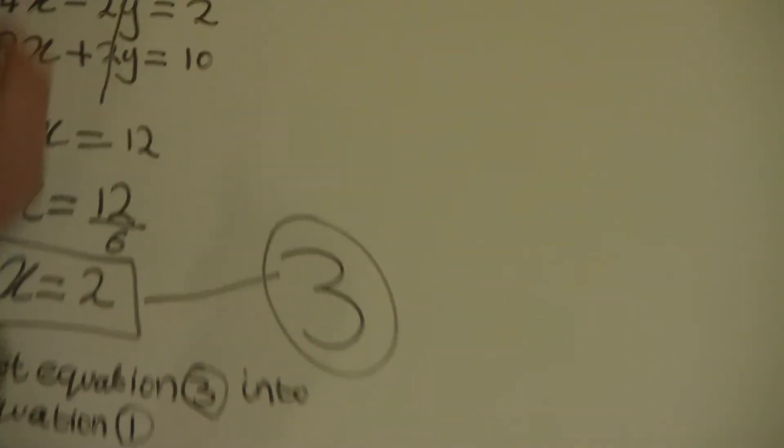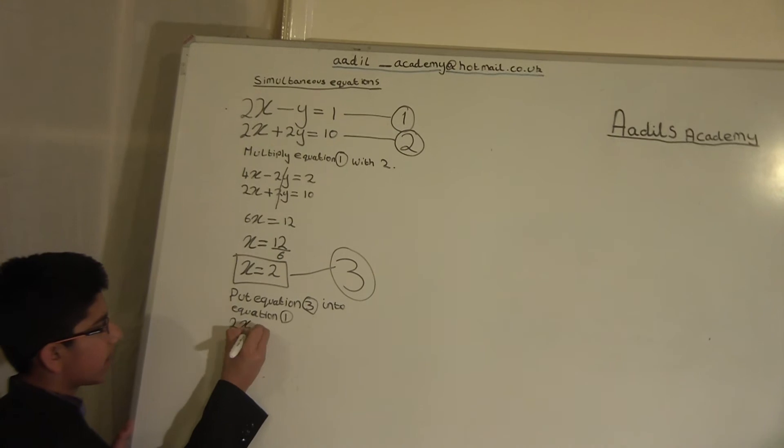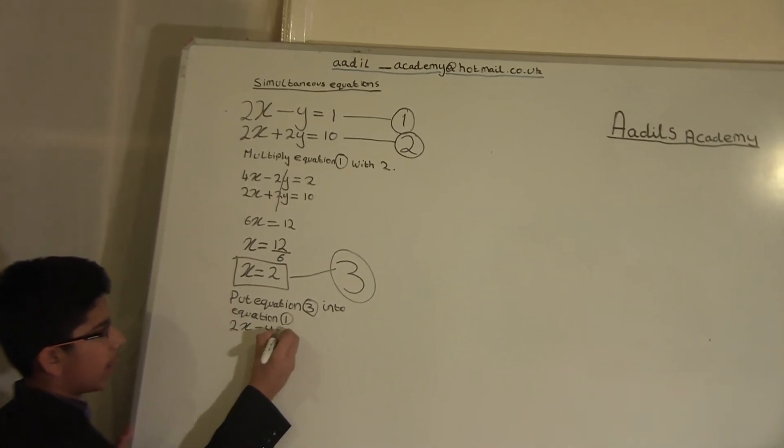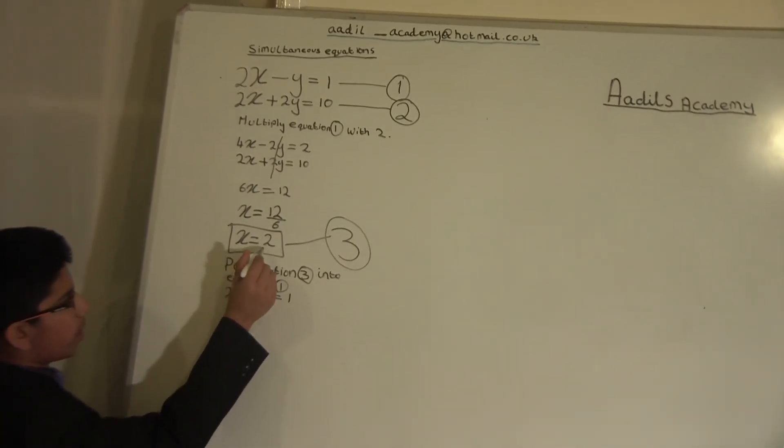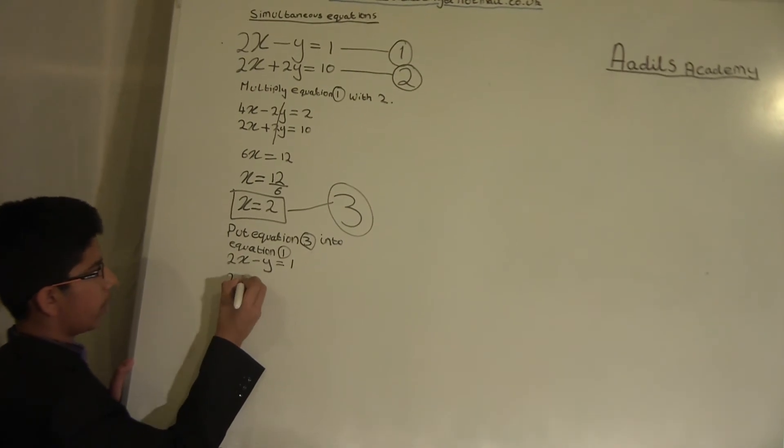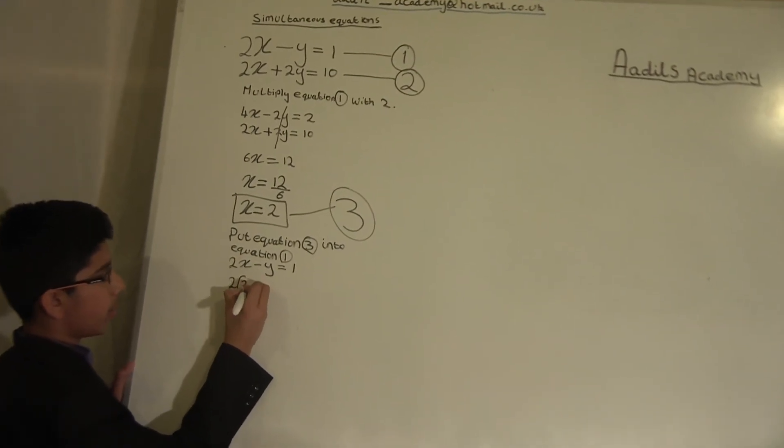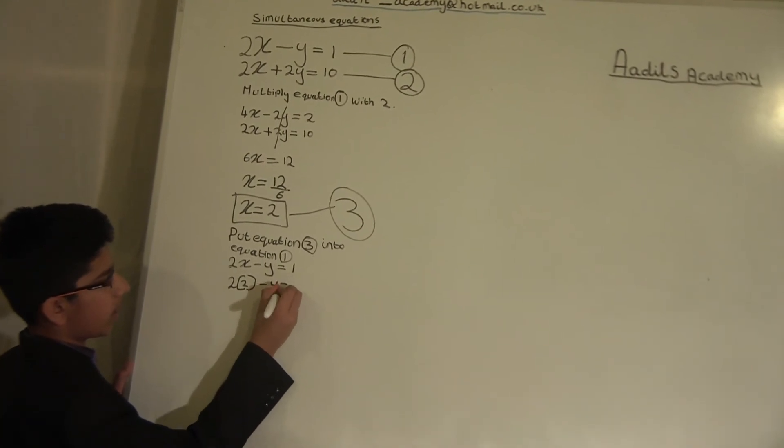So we will write that down to make it easier for you. 2x minus y equals 1. Now we will write that 2 instead of the x. So that will be 2 bracket 2 bracket close minus y equals 1.